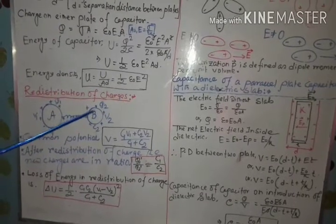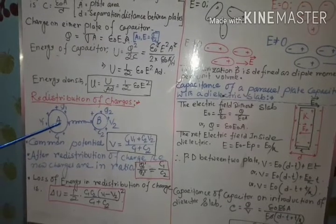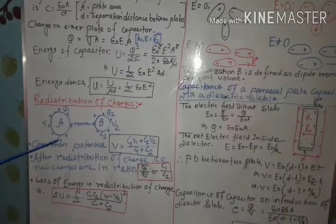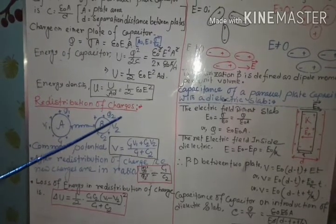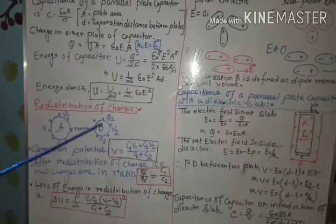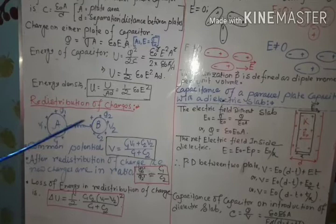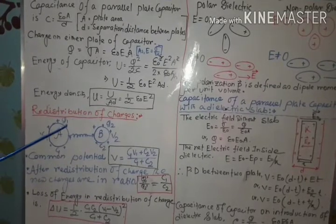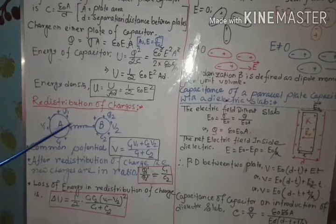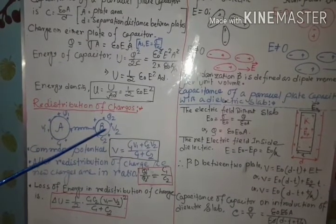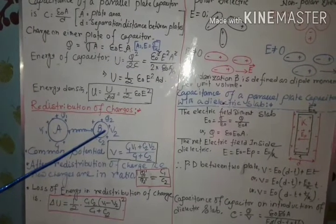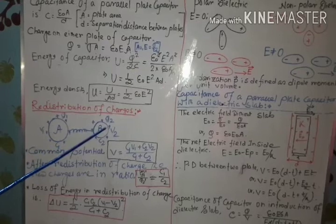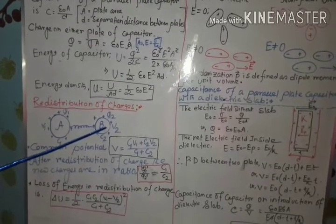To understand the redistribution of charges, we consider two insulated conductors A and B. Conductor A has positive charge Q1, potential V1, and capacitance C1. Similarly, conductor B has charge Q2, potential V2, and capacitance C2. Whenever you connect these two conductors by a connecting wire, redistribution of charge takes place until both conductors attain a common potential.